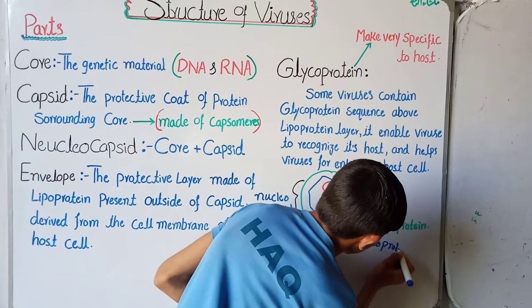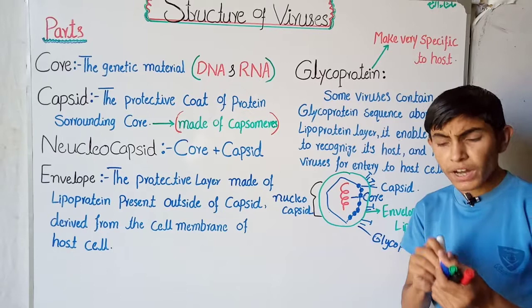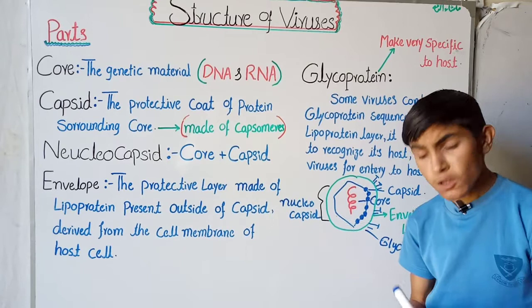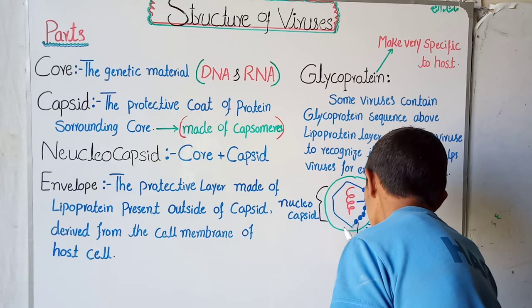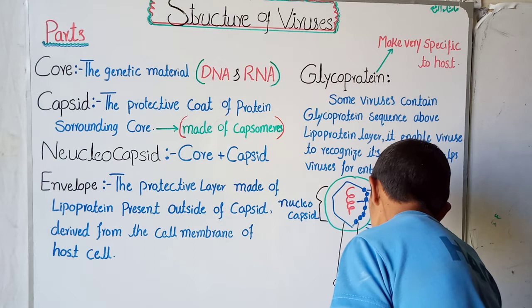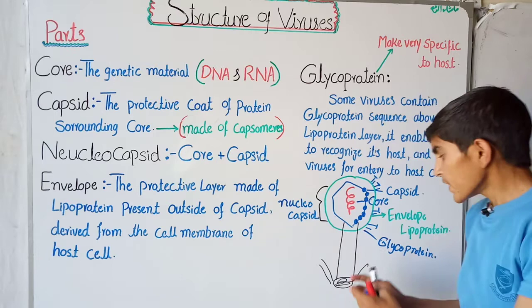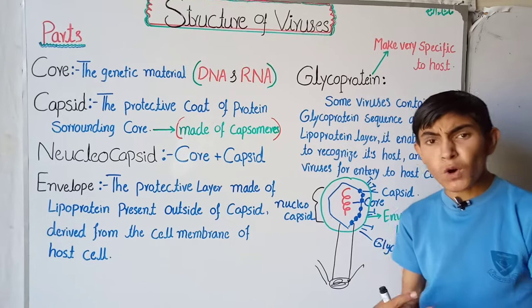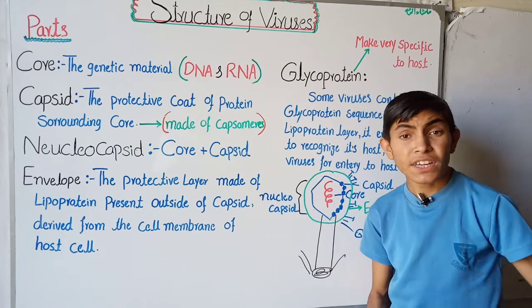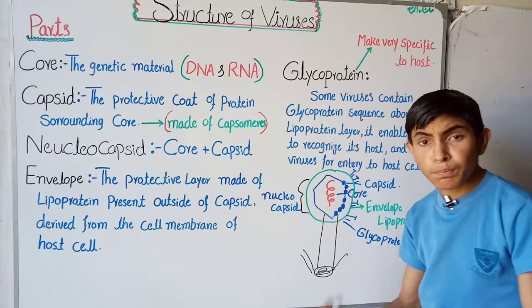This is the typical structure of a virus. In some viruses there is also a tail part present, like the bacteriophage virus, whose structure is different and also has a tail part. In the next lecture we will talk about the bacteriophage virus structure.